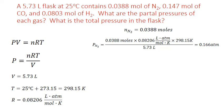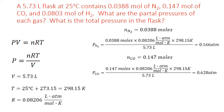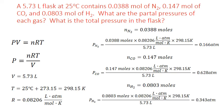We do the same calculation for carbon monoxide, but use the moles of carbon monoxide instead. Substituting into the equation, our units cancel, leaving us with only atmospheres, giving 0.628 atmospheres for the partial pressure of carbon monoxide. Finally, we do the same for hydrogen gas, using the moles of hydrogen. Substituting into our rearranged ideal gas law, our units cancel, leaving us with 0.343 atmospheres for the partial pressure of hydrogen gas.